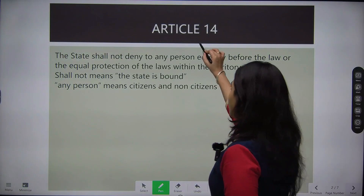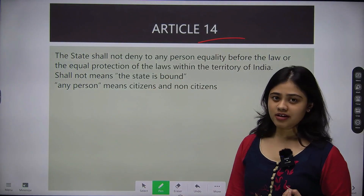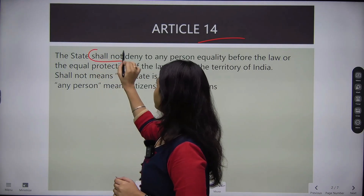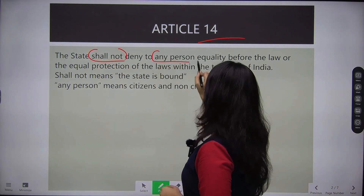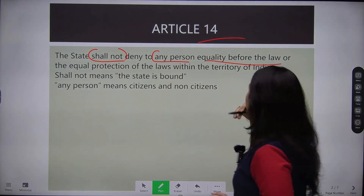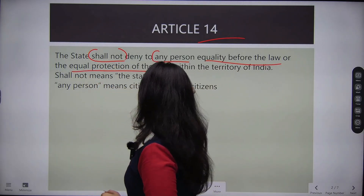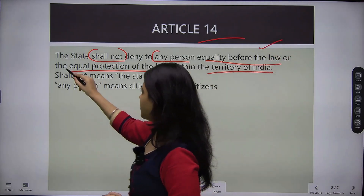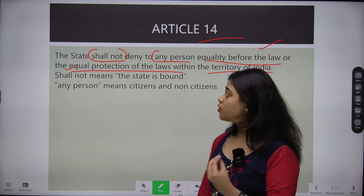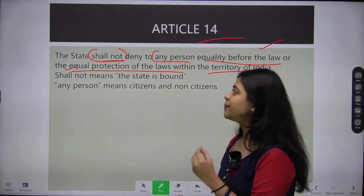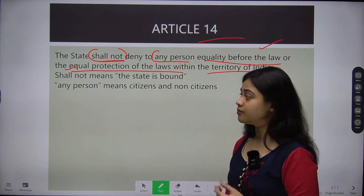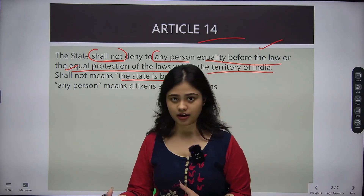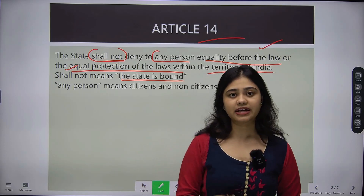Article 14 says that the state shall not deny to any person equality before law or equal protection of law within the territory of India. Here we have two terms: equality before law and equal protection of law. And importantly, the phrase 'state shall not' means that the state is bound — there is no discretionary power, it is mandatory.